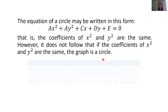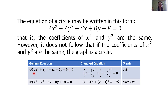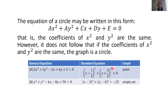So let's look at these examples. For letter A, we have 2x squared plus 2y squared minus 2x plus 6y plus 5 is equal to 0. We can see that the numerical coefficients of the terms with x squared and y squared are the same — both are 2. So it follows the same pattern of form.